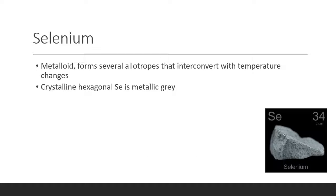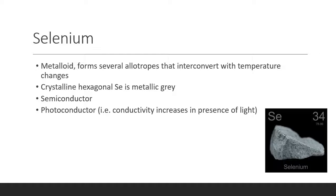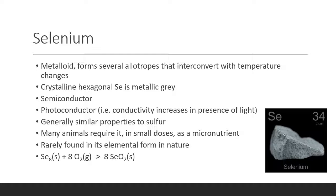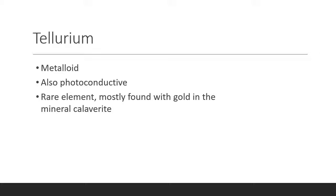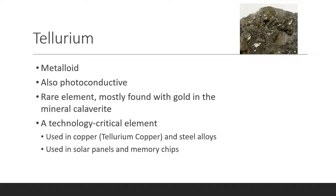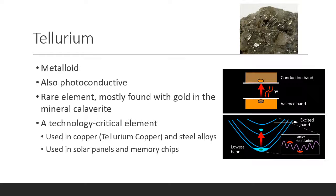Selenium is a metalloid that forms several allotropes depending on temperature, and is a semiconductor and a photoconductor, whose conductivity increases in the presence of light. It has generally similar properties to sulfur. Just like selenium, tellurium is also a photoconductive metalloid that is found in gold with the mineral calaverite. It is technology critical, used in alloys, solar panels, and memory chips. The principle of photoconductivity works in that electrons are excited by light from a valence band to a conduction band, thus increasing electronic conductivity.